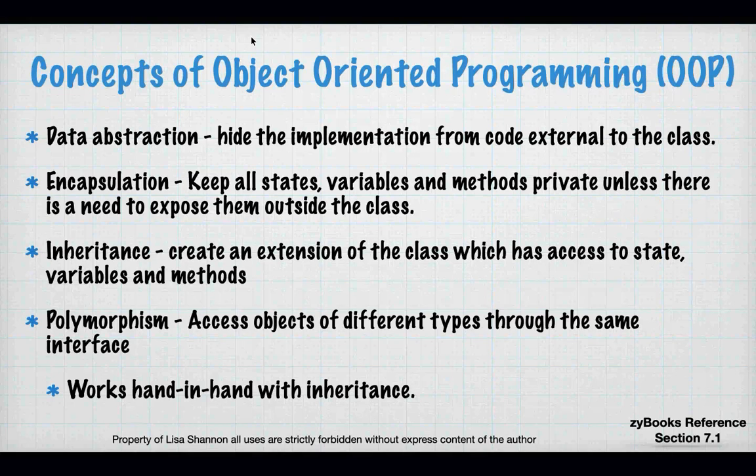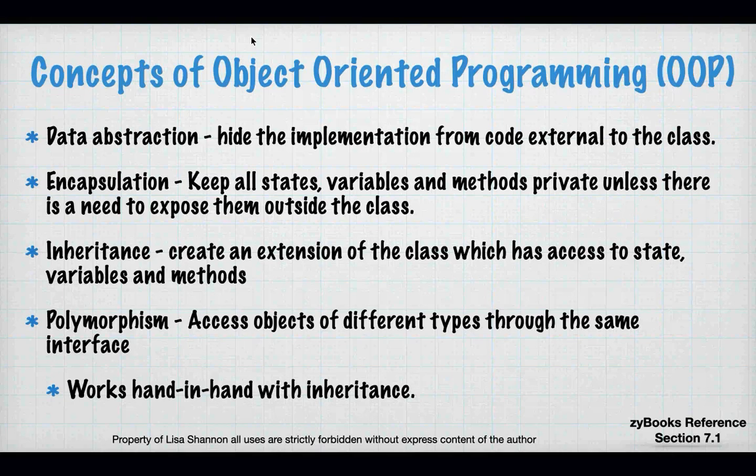I think they should have an entire module just on inheritance to get it right. Polymorphism is accessing objects of different types through the same interface, and we will see this when we start overloading operators. Polymorphism and inheritance work hand in hand — in fact, all of these work hand in hand to allow you to really encapsulate your code.